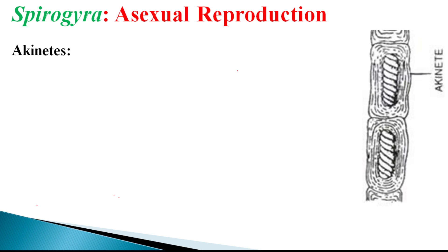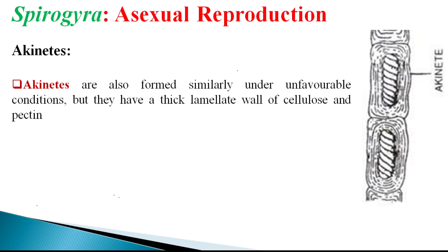Now let's look at urchinates — what they are, how they look, and what their functions are. Urchinates are produced by a similar mechanism to planospore formation, also under unfavorable conditions. The key difference between a planospore and an urchinate is that urchinates have a thick laminated wall of cellulosic and pectinous compounds. A well-known species that produces urchinates is Spirogyra farlowii.